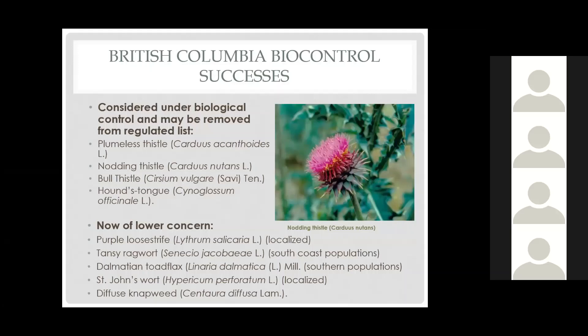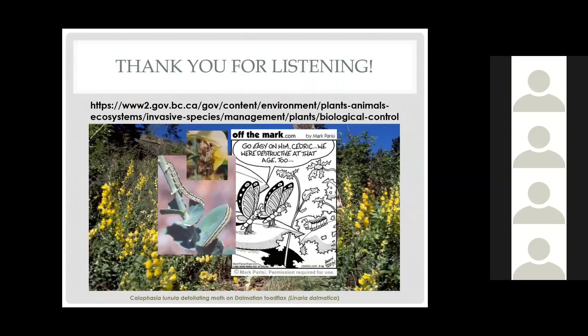The data analysis will help us understand where individual plant-and-agent combinations fall on the biocontrol outcome graph. Species considered biological successes — under control in the province — are plumeless thistle, nodding thistle, bull thistle, and hound's tongue. Species of lower concern include purple loosestrife with localized control; tansy ragwort with south coast populations under control; dalmatian toadflax with southern province populations controlled; St. John's Wort with localized control; and diffuse knapweed with localized control, for which we typically don't collect and distribute agents anymore. Spotted knapweed's position on the graph is still being determined, and we are hoping it is coming through to the very end.